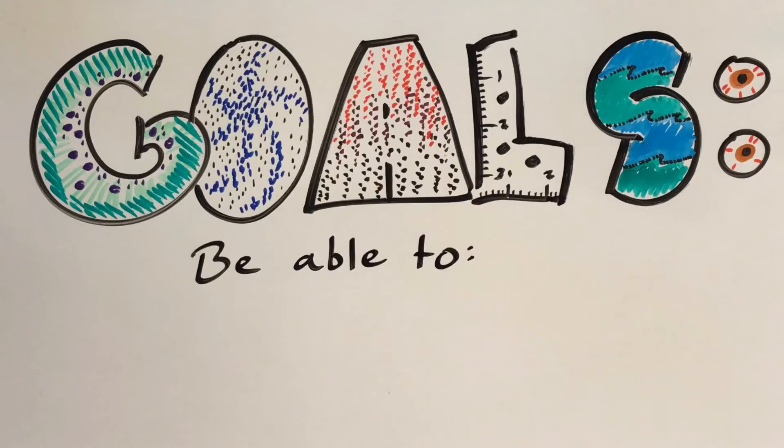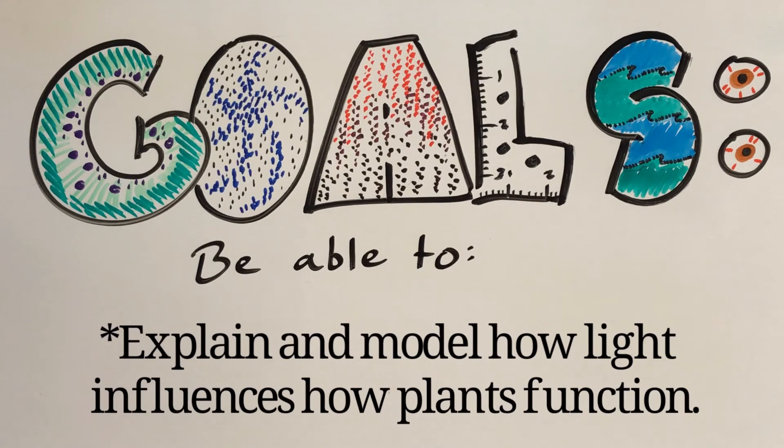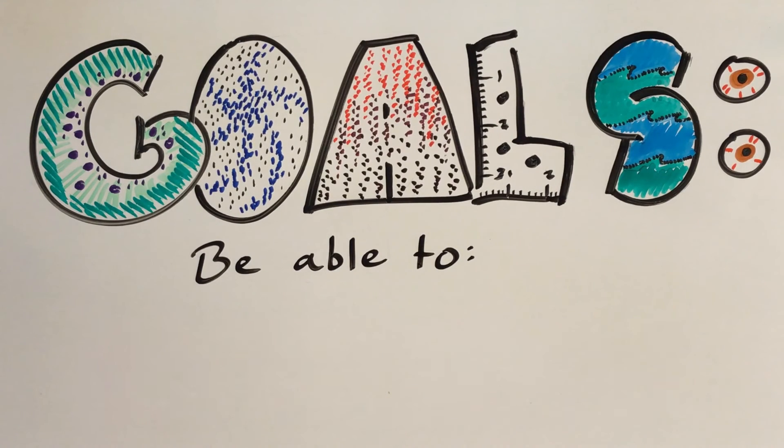Let's review the goal of this video to make sure that you met it. After watching this video, you should be able to explain and model how light influences how plants function. If you can't do that, go back and watch the parts of the video you don't understand.